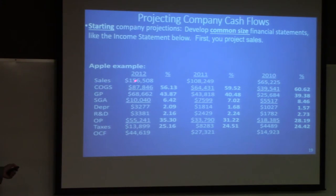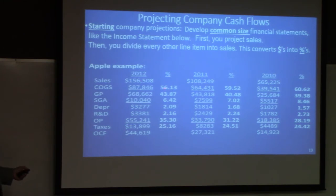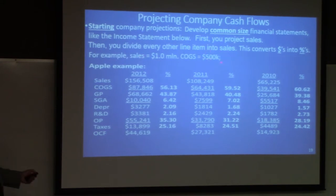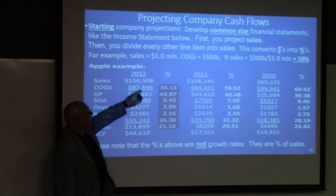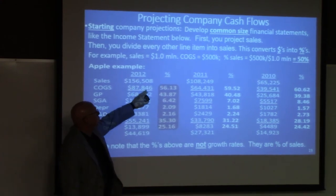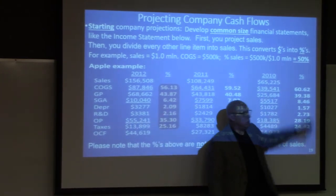First, we have to project sales. If we're going to project our income statement, we first project sales, then divide every other line item into sales, converting those dollar figures into percentages. For example, if sales are a million dollars and cost of goods are $500,000, then cost of goods as a percentage of sales is 50%. Note that these percentages are not year-to-year growth rates — they are each line item divided into sales. For instance, cost of goods sold of $87,846 divided into $156,508 gives cost of goods sold as 56.13% of sales in 2012. In 2011 it was 59.52%, and in 2010 it was 60.62%.